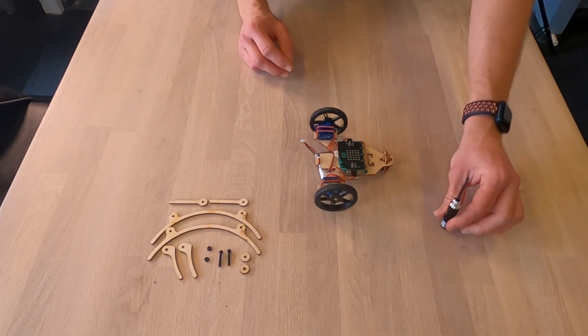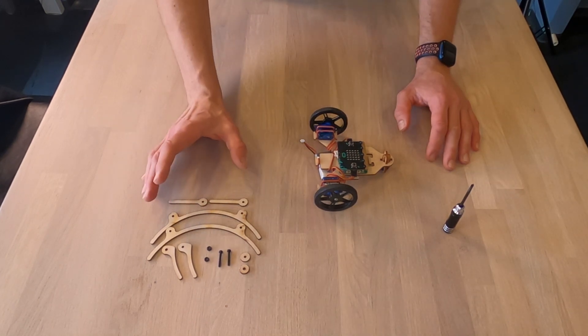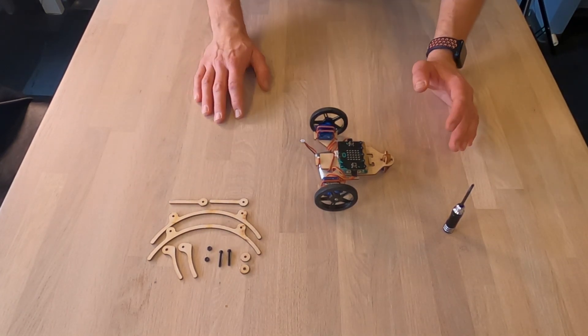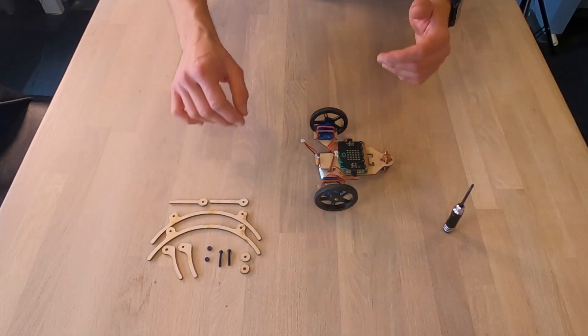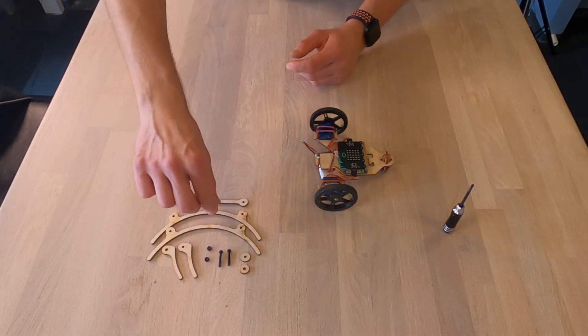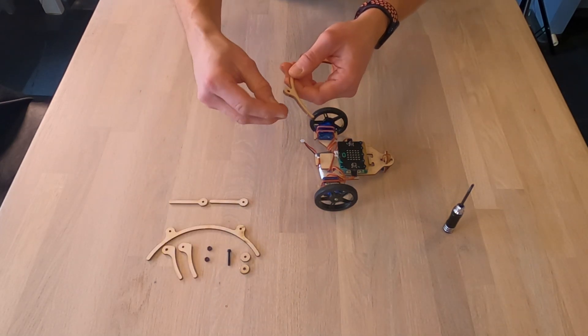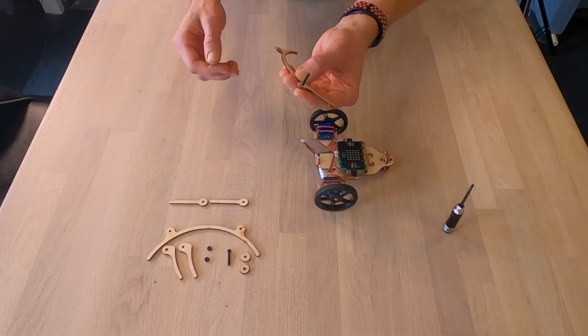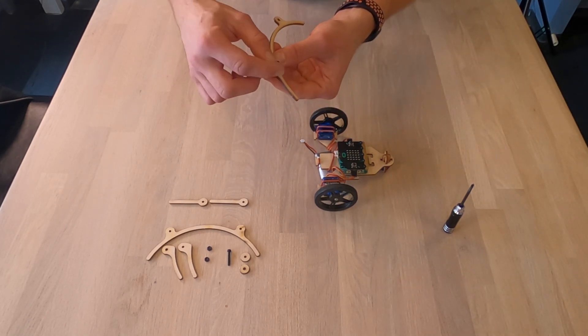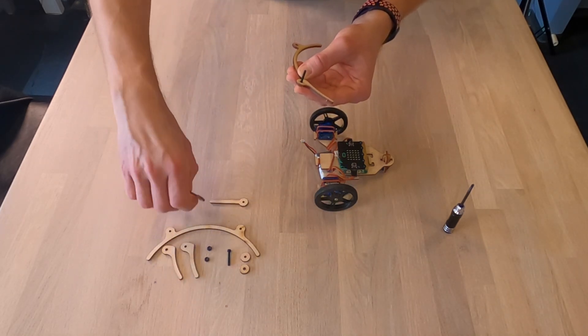So the next thing I want to do is make the football arms ready. I'm going to start with one of these. Take the nut, take the screw through here. Then I have one of these arms. Place this one on top of that.